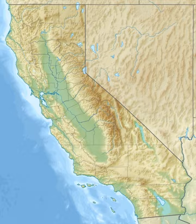The San Andreas Fault is a continental transform fault that forms part of the tectonic boundary between the Pacific Plate and the North American Plate. The strike-slip fault is characterized by mainly lateral motion in a dextral sense, where the western Pacific Plate moves northward relative to the eastern North American Plate. This fault runs the length of California from the Salton Sea in the south to Cape Mendocino in the north, a distance of about 810 miles.